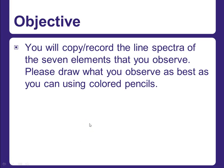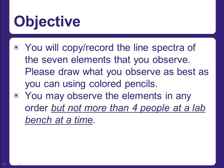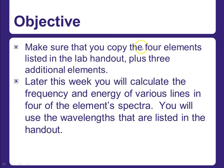You're going to copy and record the line spectra of seven elements that you observe, doing your best using colored pencils to copy what you see. You may observe the elements in any order, but no more than four people at a lab bench at a time for safety reasons, so organize yourselves to cycle through all the lab stations. Make sure you copy the four elements listed in the lab handout plus three additional elements. Later this week we'll calculate the frequency and energy of various lines — for today, all I want you to do is copy down the bright line spectra.